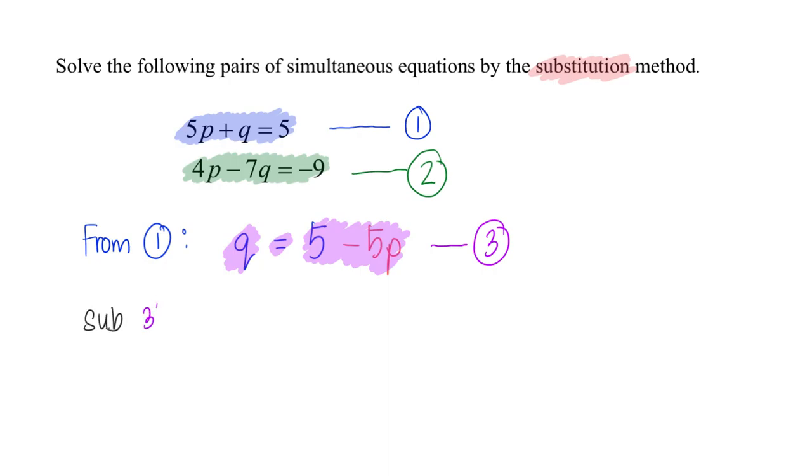equation 3 into 2. So I will have 4P minus 7Q, and you will notice Mr. Tang does not write the letter Q because Q and 5 minus 5P are the same, they are equal to each other, meaning I can substitute them like this.